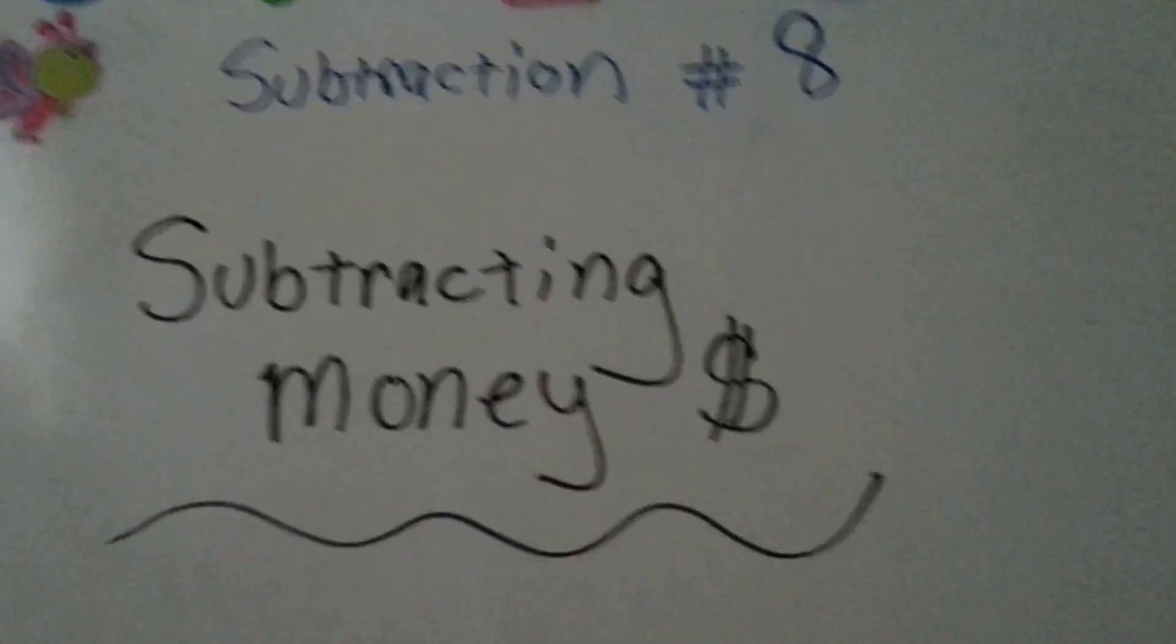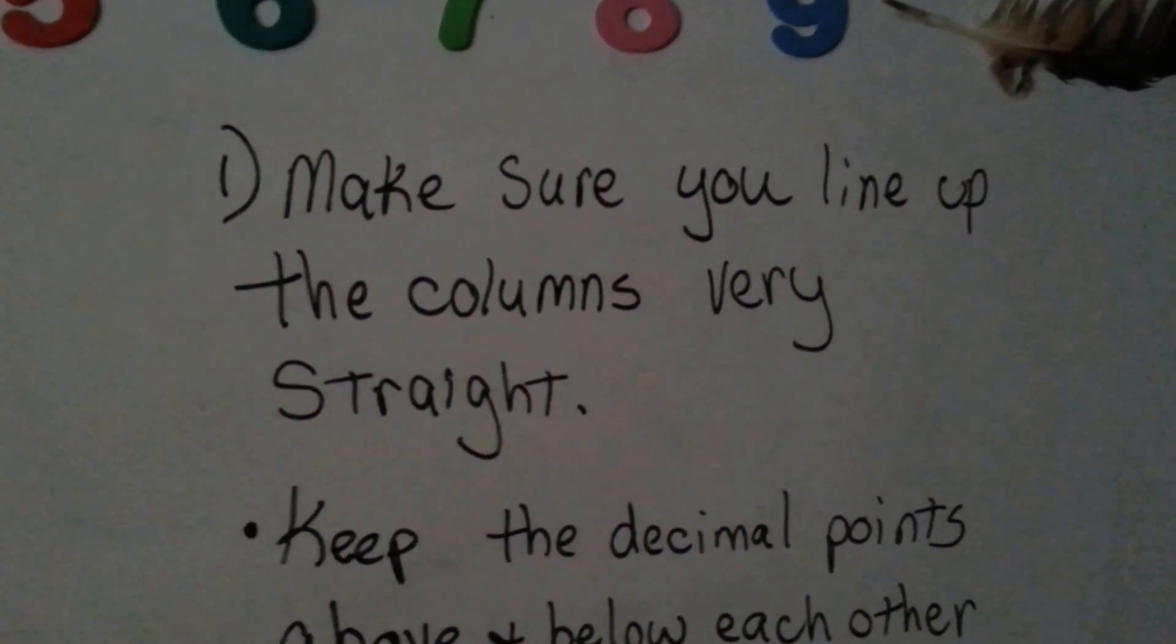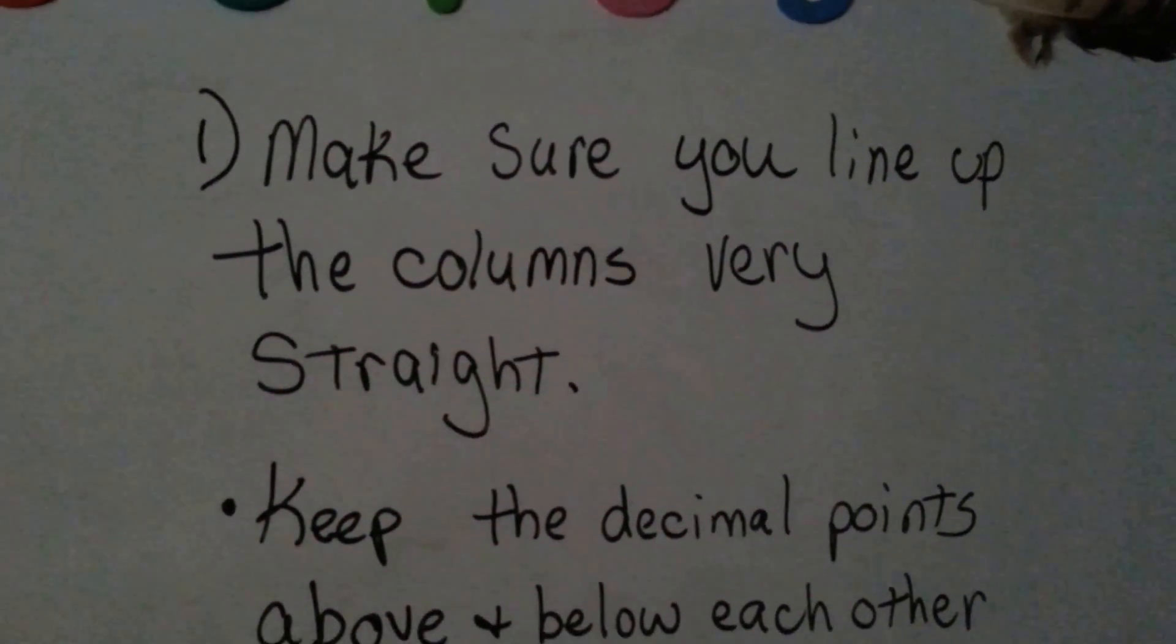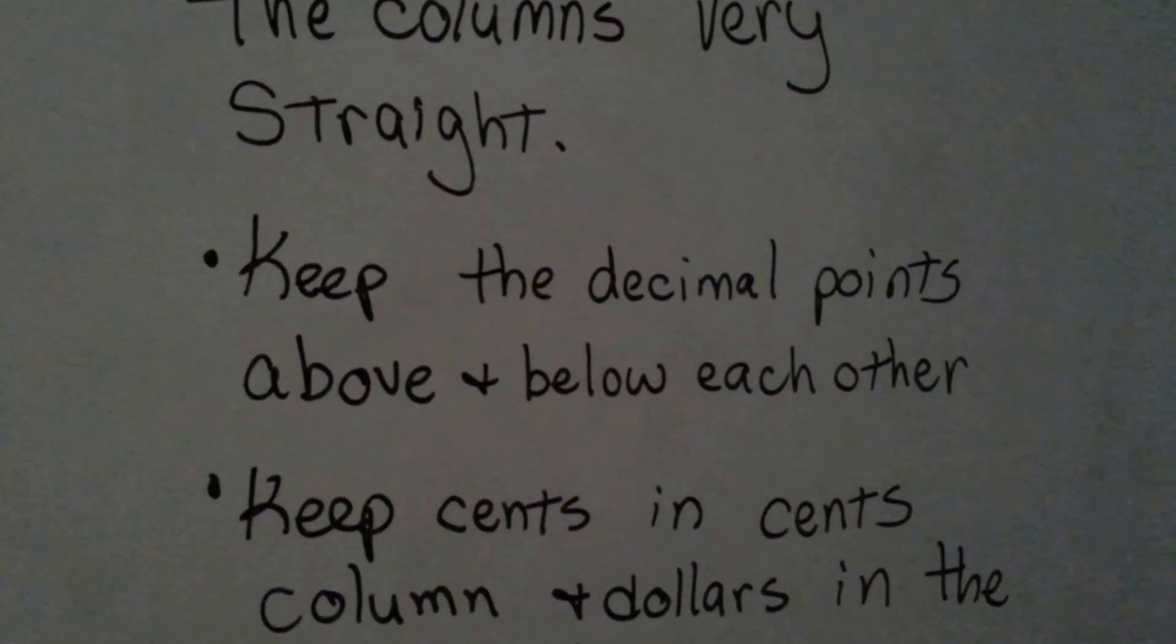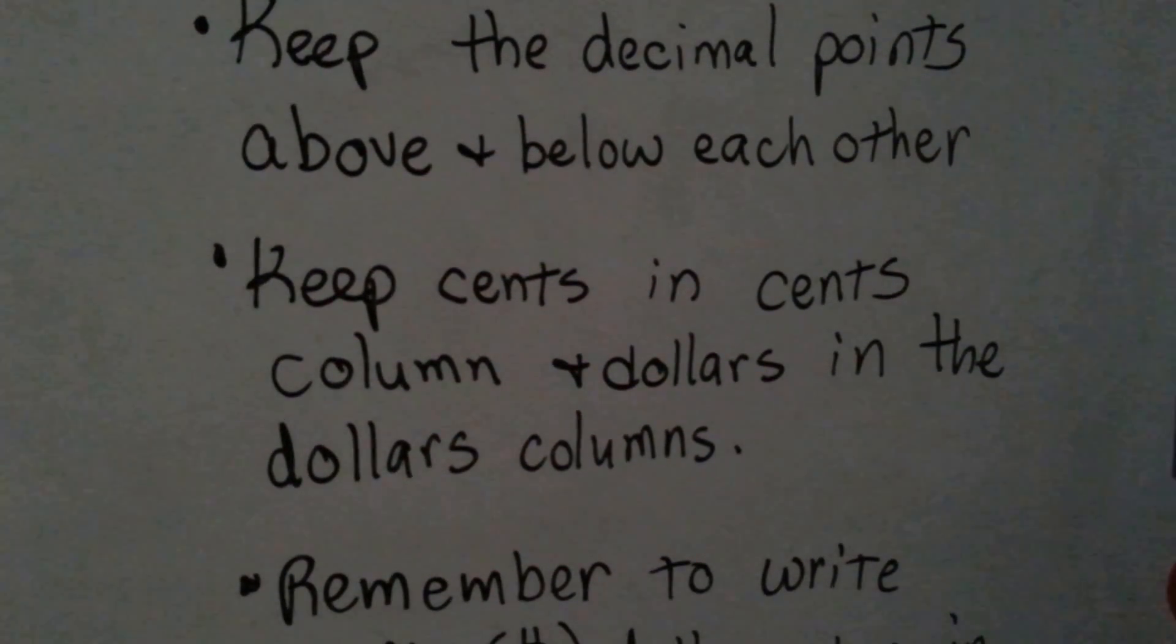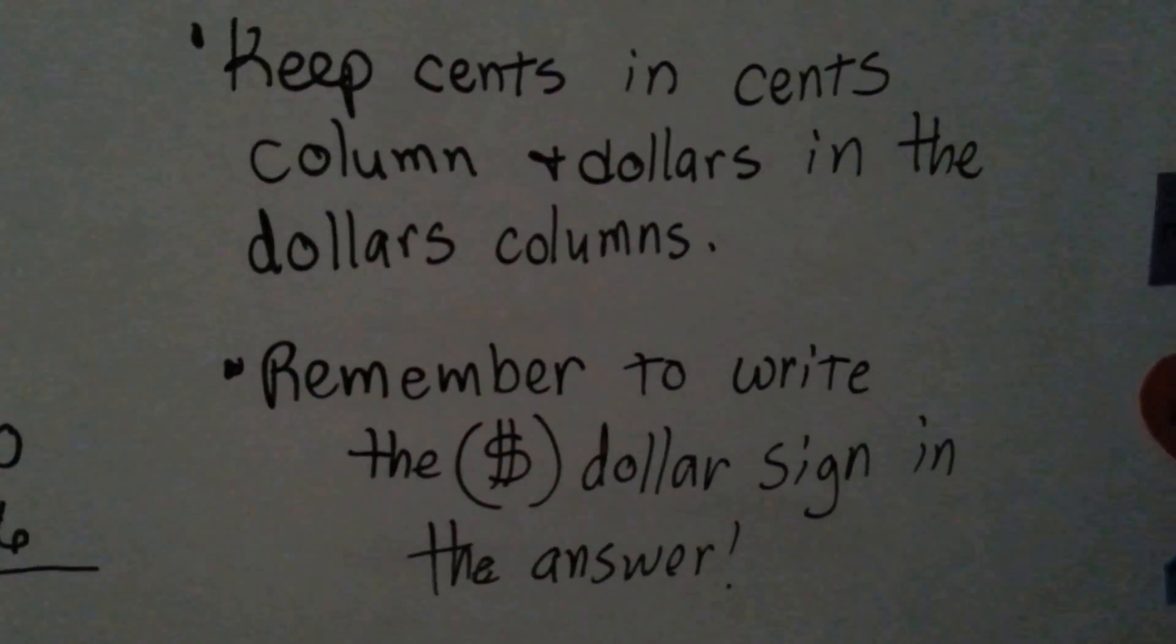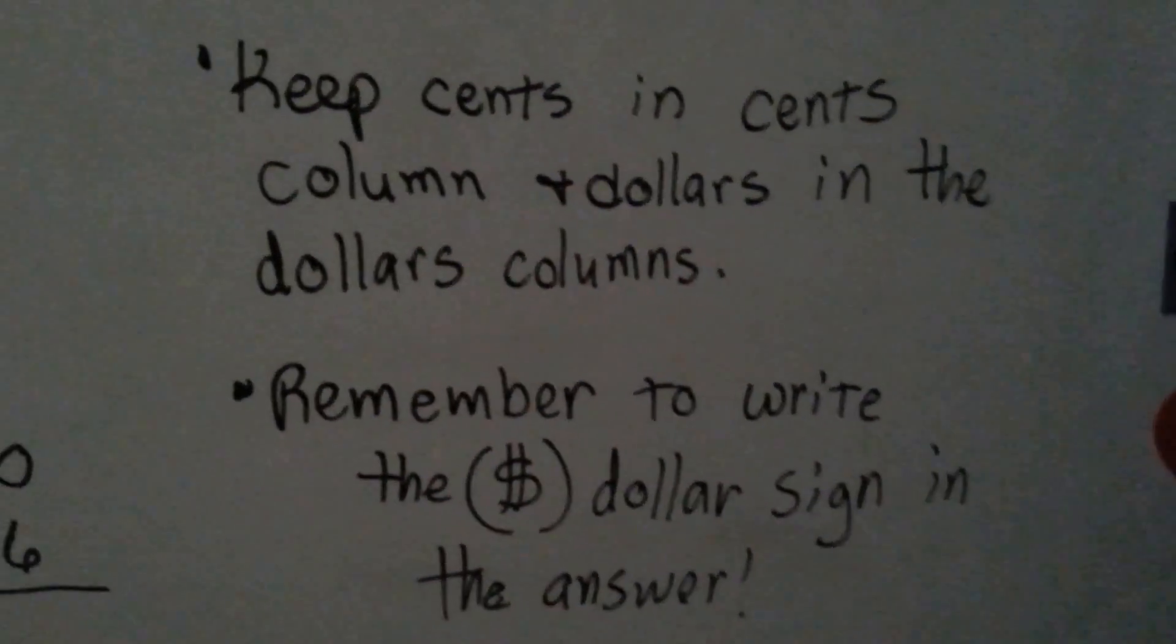Subtracting money. It's basically the same as adding money. You want to make sure you line up the columns very straight. You want to keep the decimal points above and below each other. You want to keep your cents in the cents columns and your dollars in the dollar columns. And you want to remember to write the dollar sign in your answer.